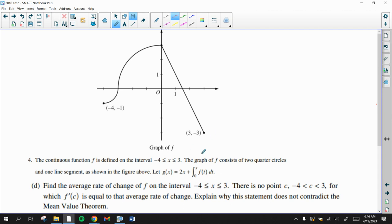The average rate of change is the value at 3 minus the value at negative 4 over 3 minus negative 4. And here it's talking about f. So we don't have to worry about g in this question. This is f. The average rate of change is just f of 3, which is negative 3, minus f of negative 4, which is negative 1, all over 3 minus negative 4. That's going to be negative 2 over 7.